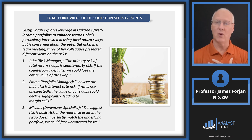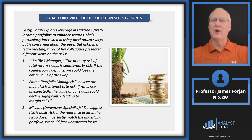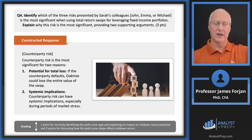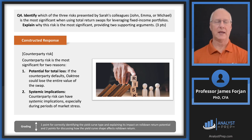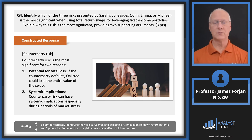Counterparty risk is therefore the dominant risk of the three — the potential for total loss if the counterparty defaults across the entire value of the swap. And if one counterparty defaults and then another defaults, that might lead to what we used to call contagion — the cool word today is systemic risk. That takes us through this constructed response set. This was fun. Hope you guys learned something here today — thanks for watching and good luck studying.